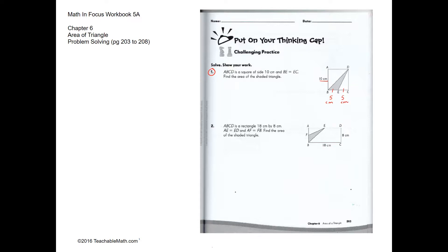Find the area of the shaded triangle. The base is 5 and the height is 10, so the area of the triangle will be half base times height: half of 5 times 10, giving an answer of 25 cm squared.